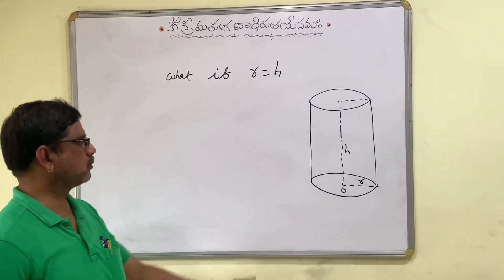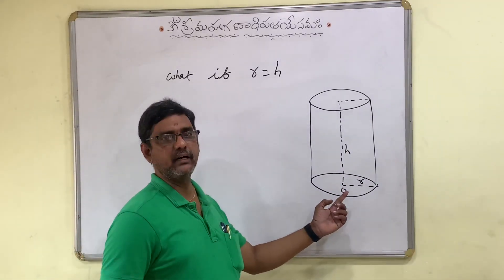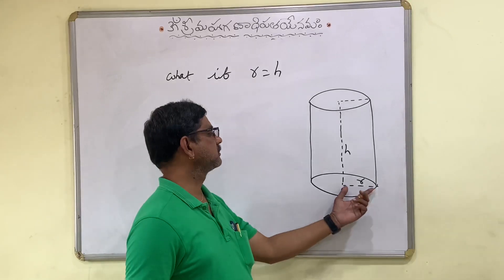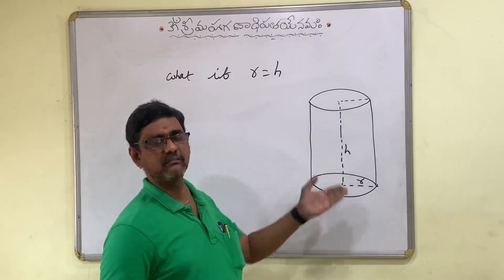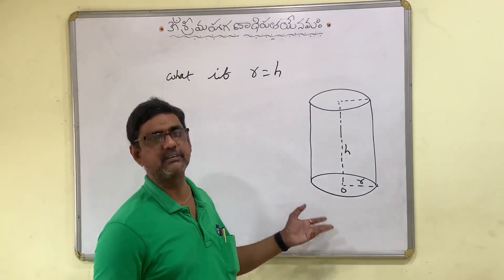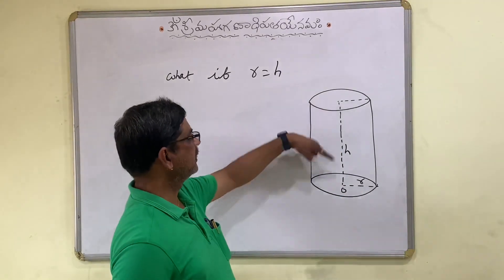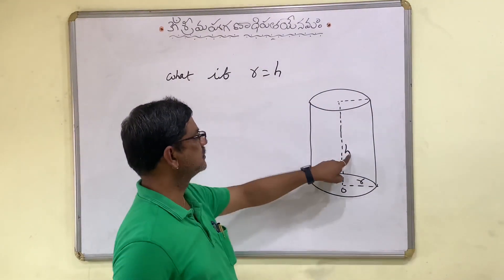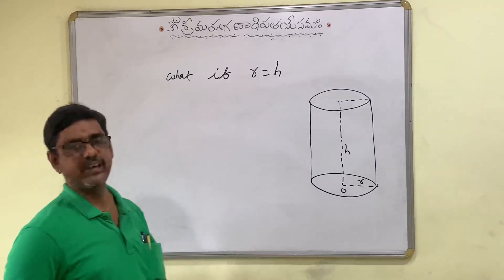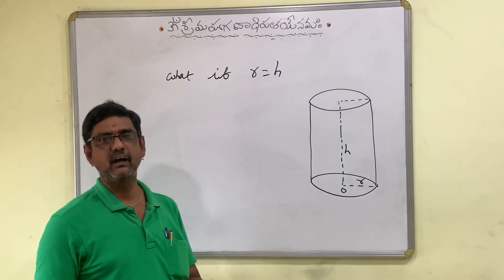Let us consider one more object: cylinder. In a cylinder, the top face and bottom face are both circles. Since we are dealing with only right circular cylinders, the top and bottom faces are congruent circles, since their radius is the same. The perpendicular distance between the centers of both circles is known as the height of the cylinder. Now what happens if R is equal to H? What will be its curved surface area, total surface area, and volume?